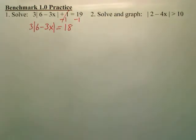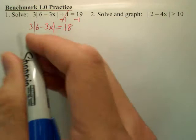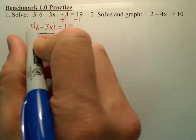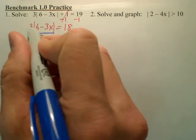Now the absolute value is still not by itself, so to get this absolute value completely by itself, I have to get rid of the 3. The 3 is multiplied on, so you're going to divide it off.